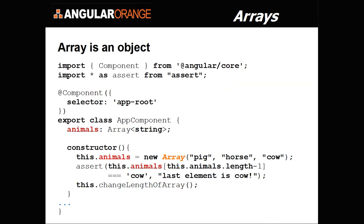Let's take this example to understand what it means for an array to be an object. Here I have an app component. I'm importing Component from AngularCore and importing asterisk as assert from assert. I have an app component annotation with attributes and a defined selector. I left out the external template and stylesheet for real estate reasons on the slide, but the bottom line is I'm just logging into the console with these examples to show what comes out in the log and assertions.